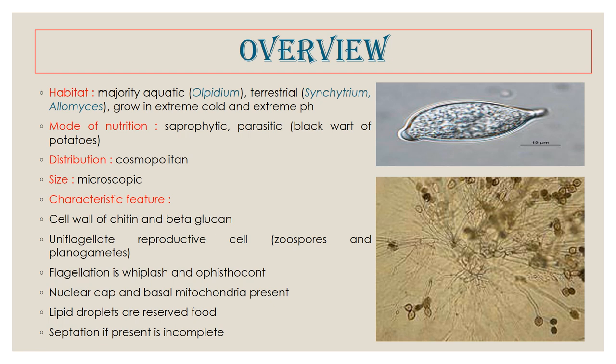The Chytridiomycetes are generally aquatic — most chytrids are aquatic, and those that are aquatic are mostly considered primitive fungi, while those which are terrestrial are considered more advanced fungi. Among class Chytridiomycetes, the majority are aquatic. For example, Olpidium. Sometimes we can also find terrestrial species, but the terrestrial species occur in very wet soil, in irrigated soil, or soil near water bodies, or mostly in cool weather.